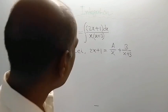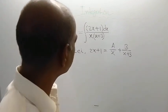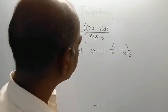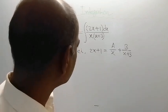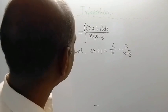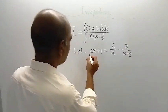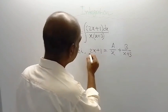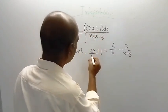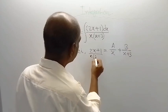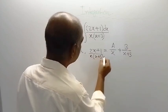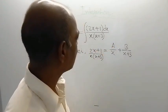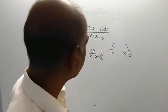So how we will get this one? If we assume this way, then, sorry, I am extremely sorry, not exactly 2x plus 1. It is equal to the given function, 2x plus 1 divided by x into x plus 3. This equal to this, A by x plus B by x plus 3.